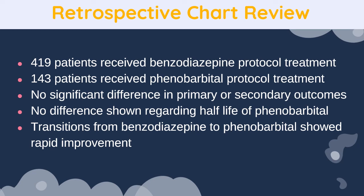The second study was a retrospective chart review with 419 patients receiving benzodiazepine treatment and 143 patients receiving phenobarbital treatment. It showed no significant difference in primary or secondary outcomes. The main outcome was development of alcohol withdrawal-related complications, including seizures, hallucinations, and delirium — no differences were found between the phenobarbital and benzo groups. There was also no significant difference in sedation rates between the tapered therapies. This shows that phenobarbital's longer half-life doesn't necessarily make it more efficacious. Notably, transitions from benzodiazepine to phenobarbital showed rapid improvement in this study, contrasting with the first study's worse outcomes in combination therapy.